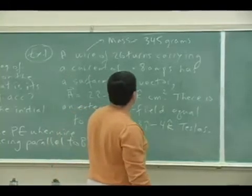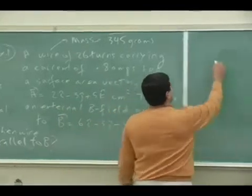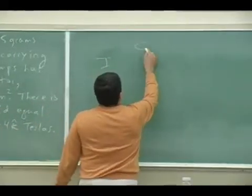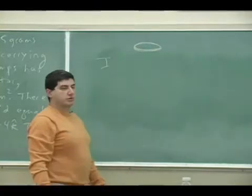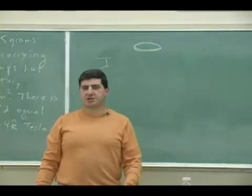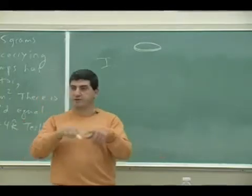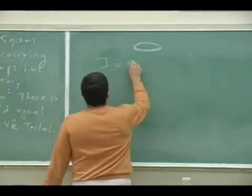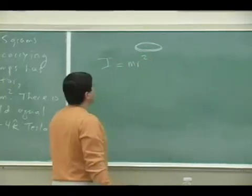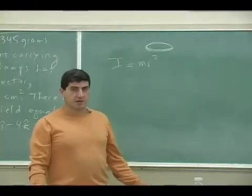So what would its moment of inertia be? Well the wire just looks like this, right? So the mass is, I mean the moment of inertia is just mr squared because all of it is concentrated at a distance of r. But I don't really know the radius but I could do this.